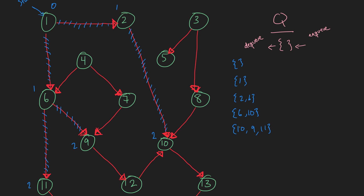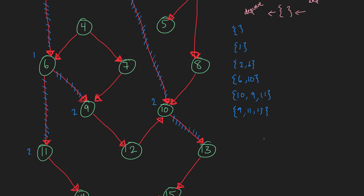Next up is 10. We dequeue 10 and enqueue its adjacency list. We've got 9, 11, and 13 now enqueued. Node 13 is at a distance of 3 from the starting point. Next up is 9 — we dequeue 9 and enqueue 12, which is also a distance of 3.